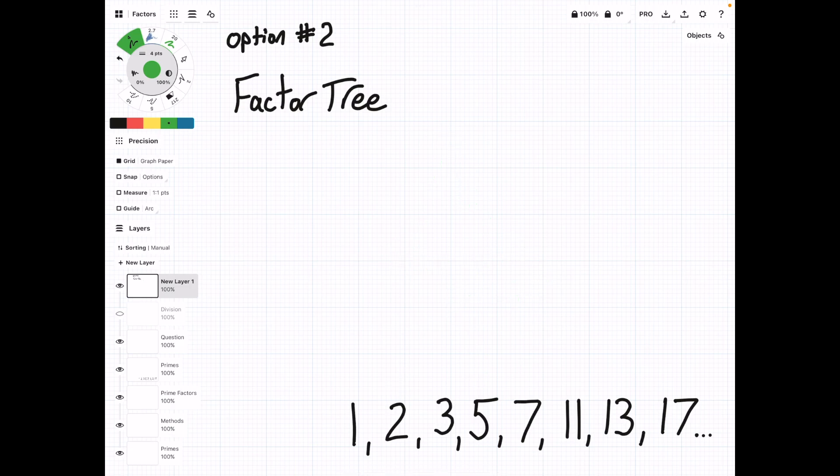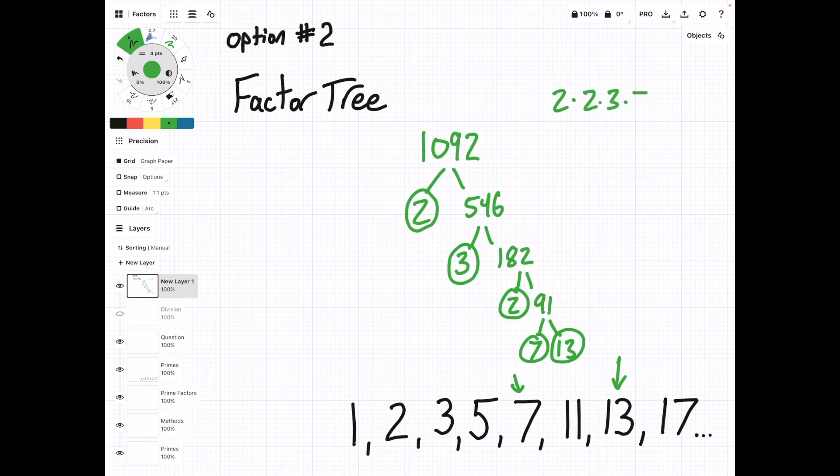Let's do another problem using the factor tree. So this time, let's start with a little bigger number, 1092. So here, maybe the easiest thing to do is split it into 2 and 546. We already got one prime there. So we're heading in the right direction. Now we can split this into 3 and 182. Got another prime. And now let's split this into 2 and 91. And finally, this one's a little bit trickier, but this is equal to 7 times 13. You can see 13 here and 7 here. So these are both primes, and we're done. So now if we list them all out, we have 2, 2, 3, 7, and 13.